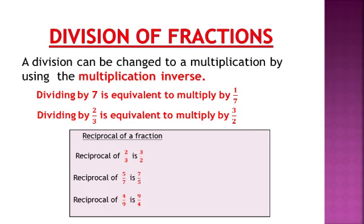A division can be changed to a multiplication by using the multiplicative inverse. Dividing by 7 is equivalent to multiplying by 1 over 7. Dividing by 2 over 3 is equivalent to multiplying by 3 over 2. Dividing by 4 over 5 is equivalent to multiplying by 5 over 4.